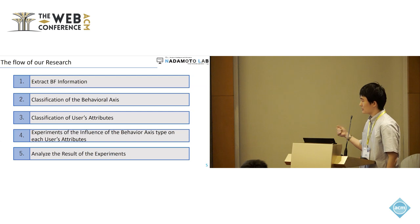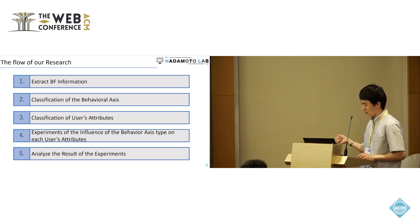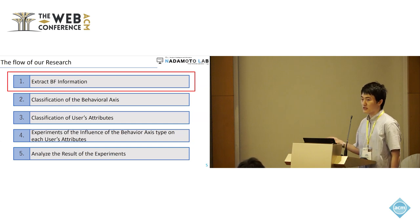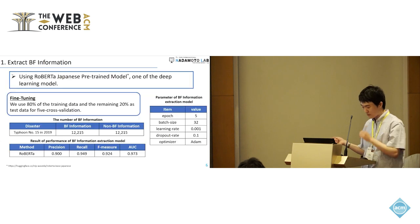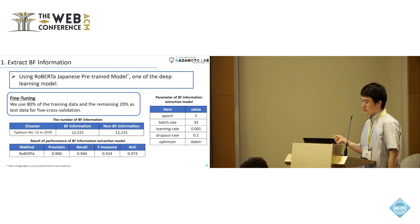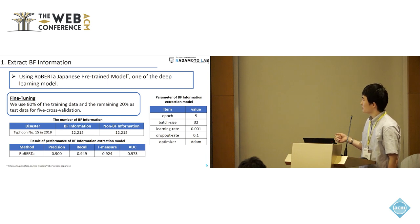This is the flow of our research. First, I will talk about the method of how to extract BF information. When we extract BF information from X, we use a RoBERTa Japanese pre-trained model — one of the deep learning models — to create a BF extracting model.